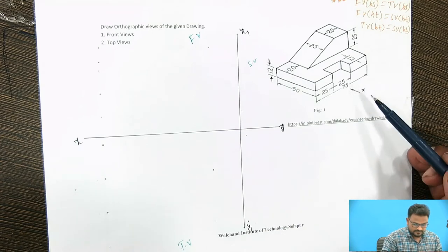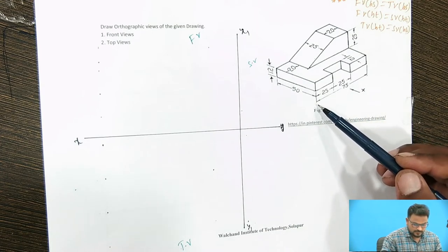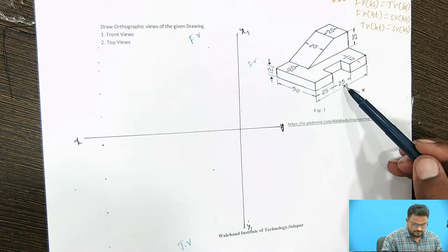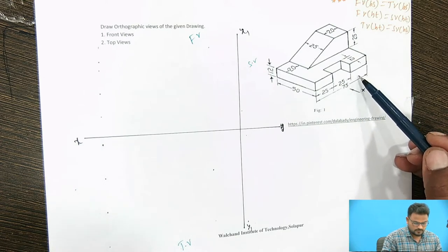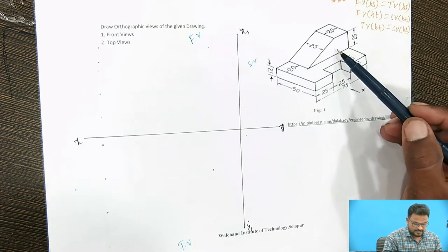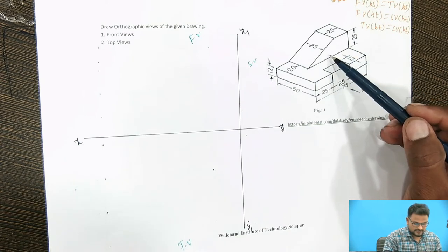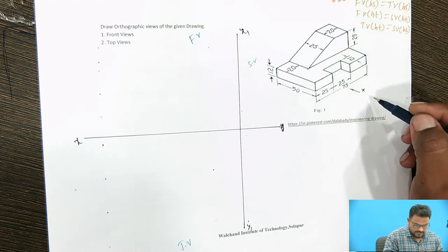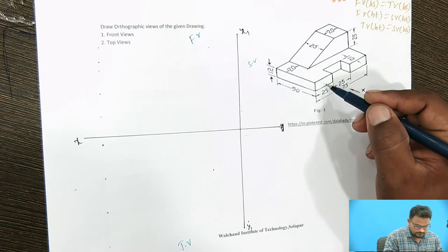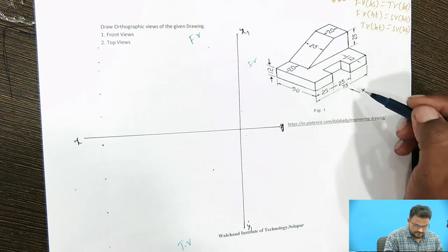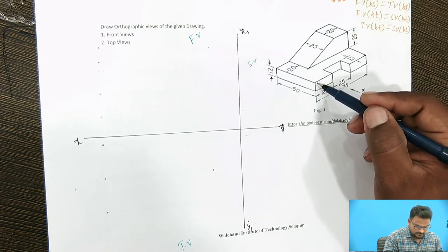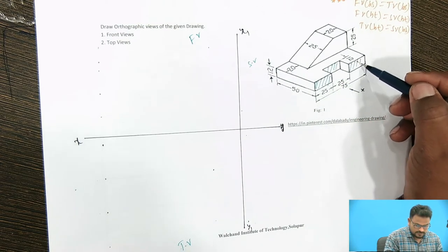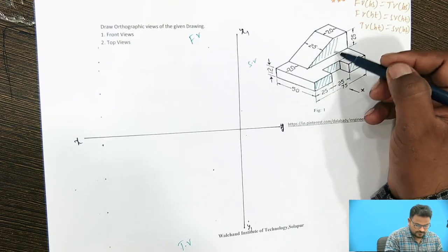When we see from the x direction, the base of the front view is 75 mm. So 25 mm, 25 mm, 25 mm — three blocks will be drawn first when we see from the front. And here also you are going to see this trapezoidal portion. When we see from the front in the x direction, you are going to see this portion, this portion, this portion, and this trapezoidal portion.